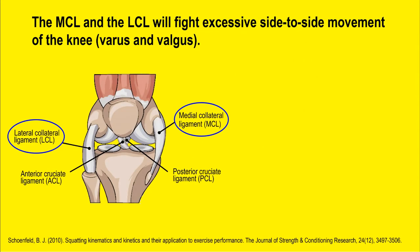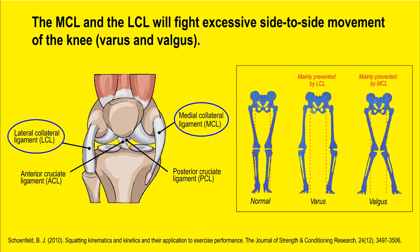We also have the MCL and the LCL — the medial collateral ligament and the lateral collateral ligament. Medial means towards the center of your body; lateral means away from it. The function of these two ligaments is to fight excessive side-to-side movements of the knee — varus and valgus. Valgus, where the knees rotate inside, is way more common in squats and can be solved through a number of ways we'll go through later.